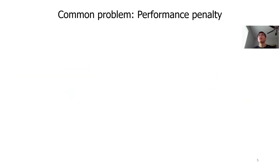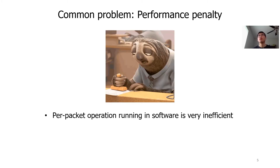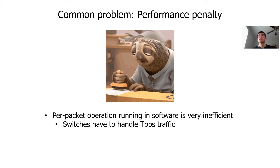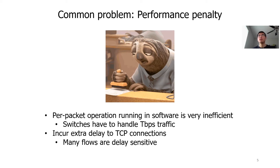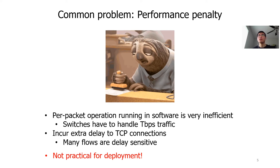The existing defenses have a common problem: performance penalty. There are two reasons. First, per-packet operations running in software are very inefficient. However, in today's data center, switches usually have to process terabits per second level traffic. Second, adding random delay incurs actual delay to TCP connections. But many flows in data centers are delay-sensitive. Because of these reasons, there is no practical deployment in today's data center.